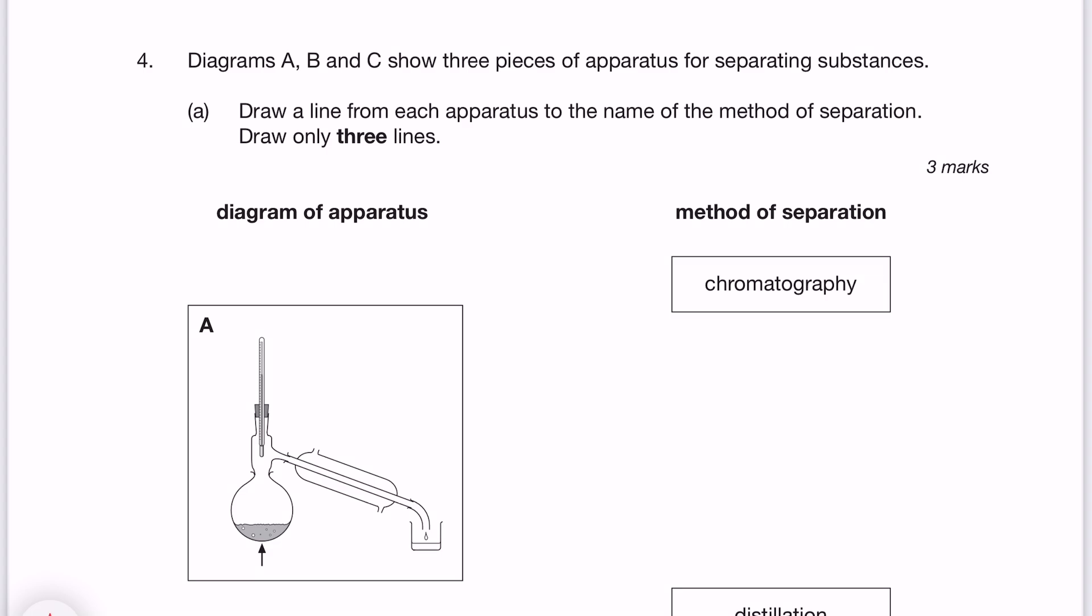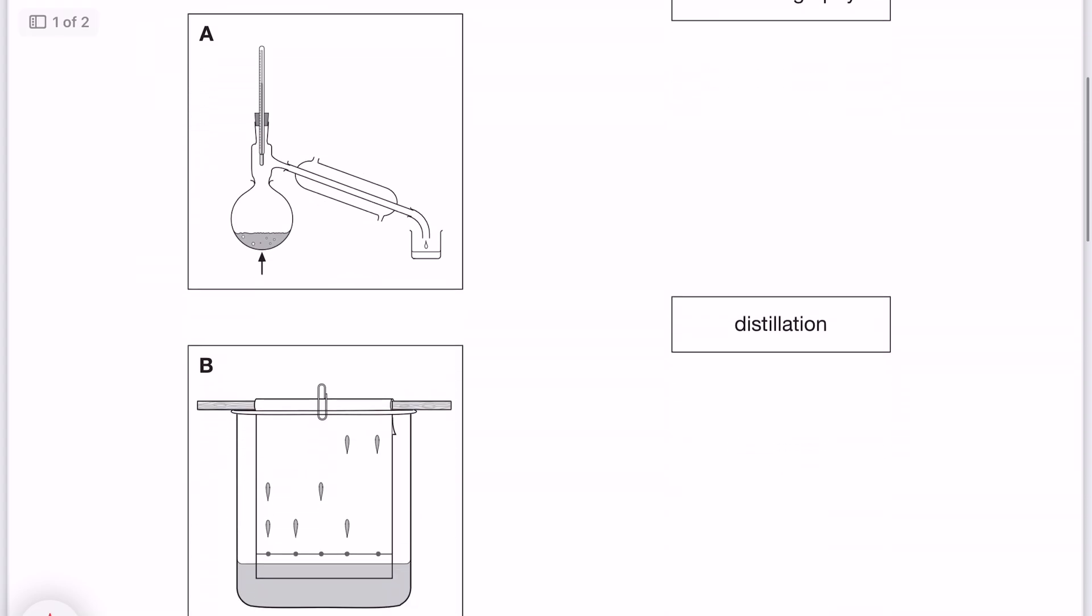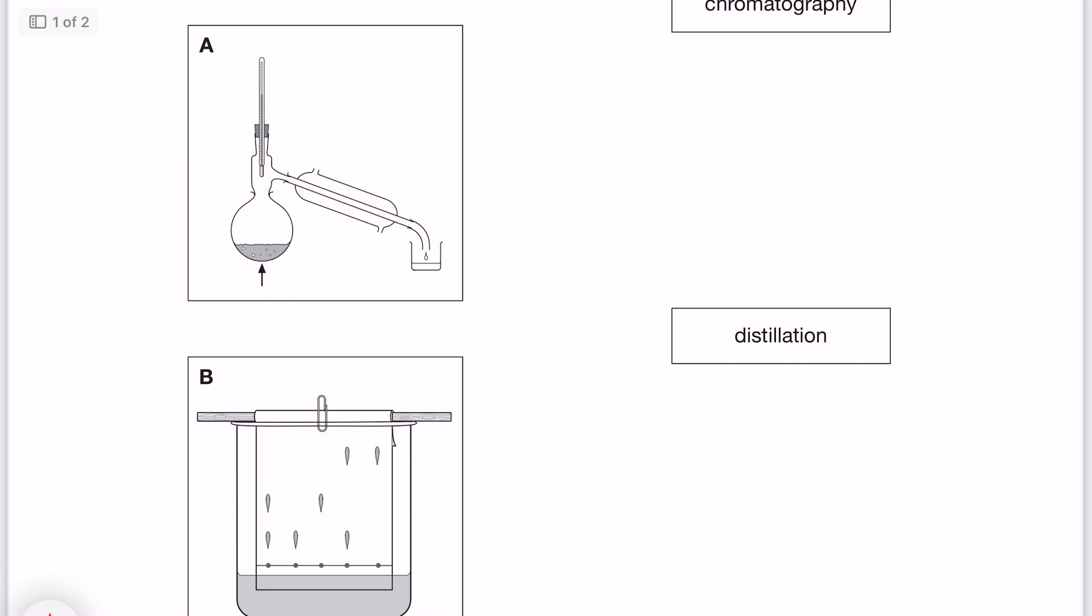So part A says, could you draw a line from each apparatus to the name of the method of separation? Draw only three lines. Well, it seems like this question wants us to identify the name of each separating technique.